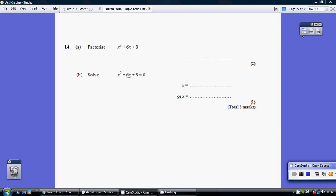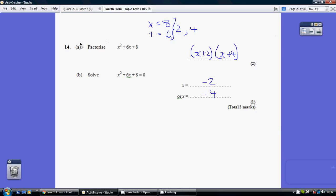Question 14. Now we're told this factorizes, so remember, two magic numbers that multiply to make 8 but add to be 6. That's 2 and 4, so x plus 2, x plus 4 is our final answer.